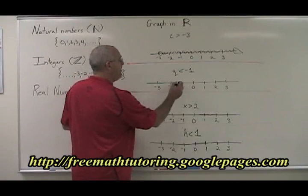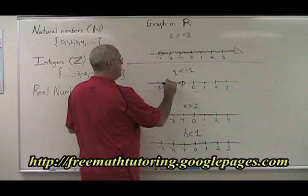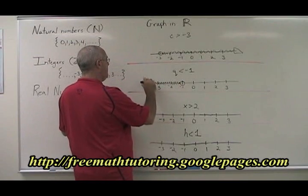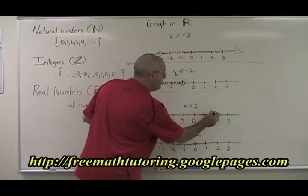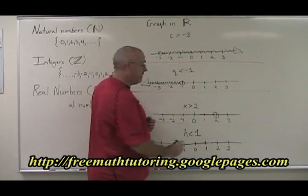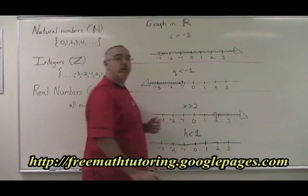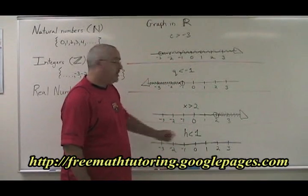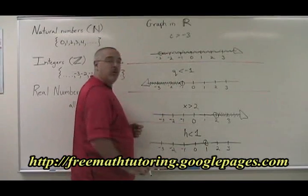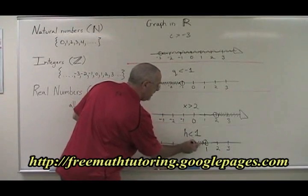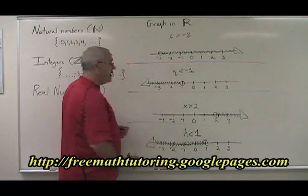Q less than negative 1. Negative 1 is not part of the answer, so we need an open circle, and then we shade to the left of it, going on forever in the negative direction. X greater than 2. 2 is not part of the answer. Open circle. Shade everything to the right of it, going on forever in the positive direction. H less than 1. 1 is not part of the answer. Open circle. We shade everything to the left of it, going on forever in the negative direction.